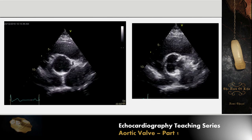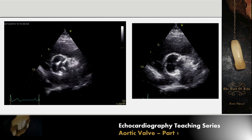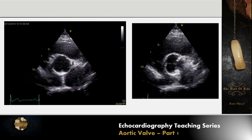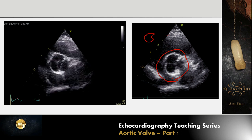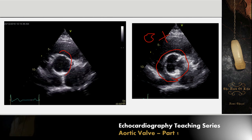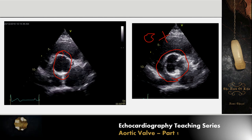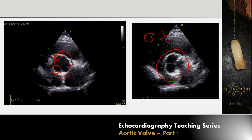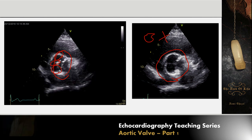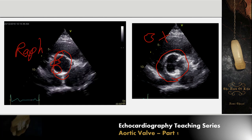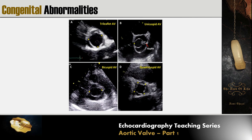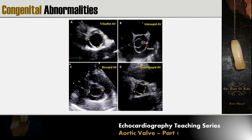In a bicuspid aortic valve, if you look at the valve in its closed position you will likely incorrectly identify it as tri-leaflet — this is why we assess only while the valve is open. You can see fusion between the right coronary cusp and the non-coronary cusp, and the line of fusion is sometimes visible and is called a raphe. In a tri-leaflet valve we count three fully opened commissures reaching the annulus; in a bicuspid valve, only two.